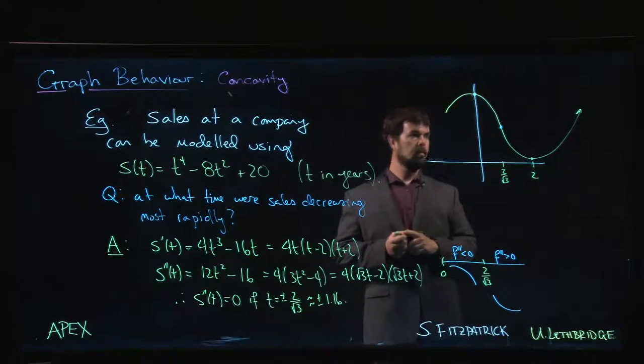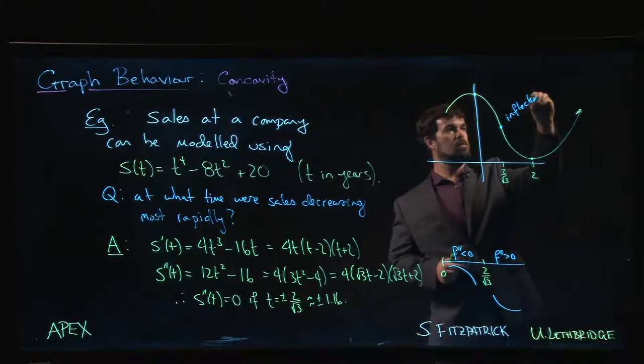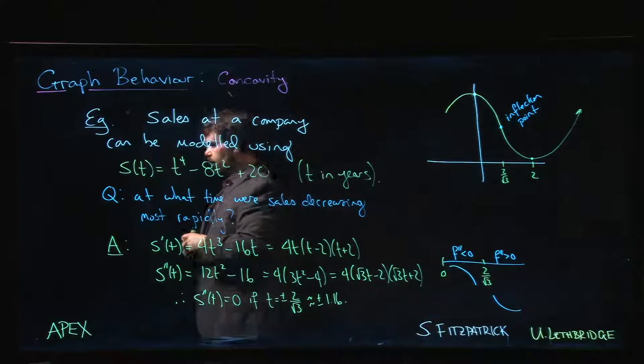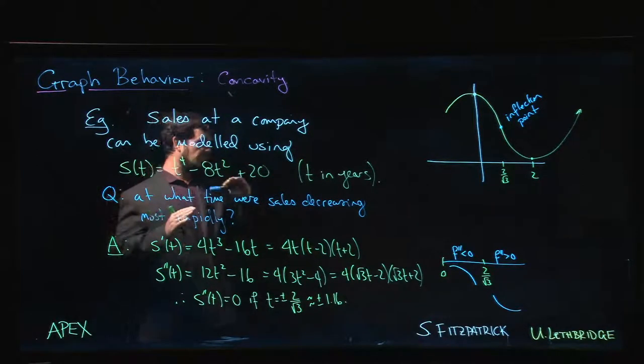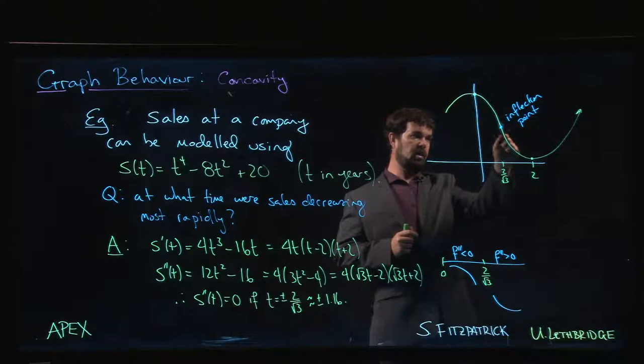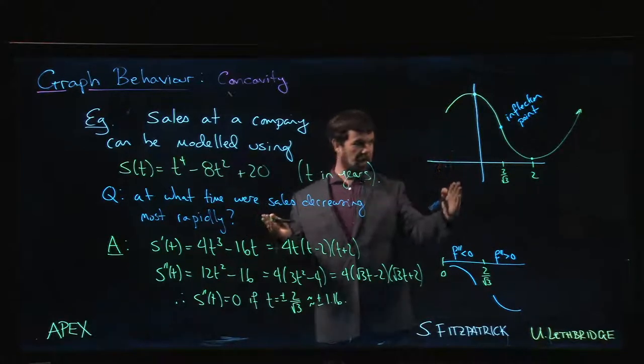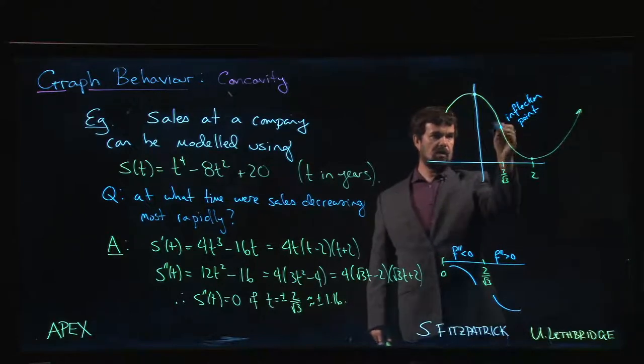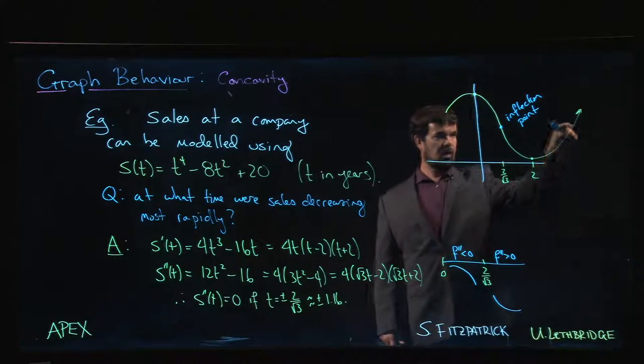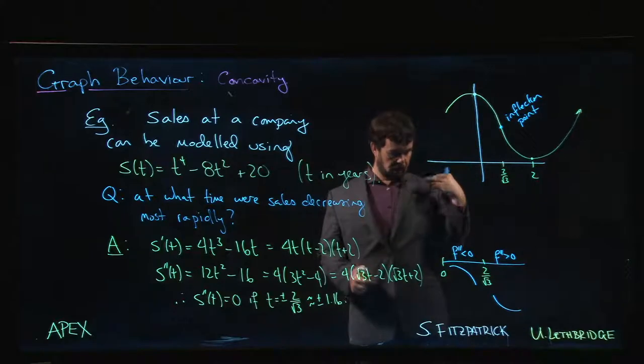This is our inflection point. It's also the point at which sales were decreasing most rapidly. The sales start falling off and the rate at which they're falling off gets worse and worse and worse until it hits this point - this was the worst possible period in the history of the company. Sales were decreasing at this very rapid rate, and then things start getting a little bit better. They're still losing sales but not losing them quite as fast. Then they hit their minimum sales down here, turn things around, and start going up again. That time at which sales were decreasing most rapidly corresponds to this inflection point.